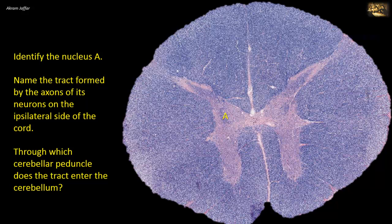Identify nucleus A. Name the tract formed by the axons of its neurons on the ipsilateral side of the cord. Through which cerebellar peduncle does the tract enter the cerebellum?